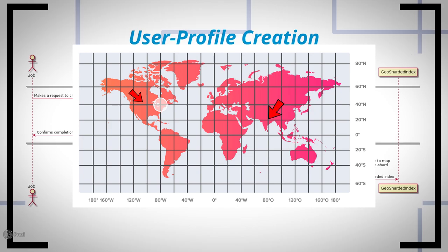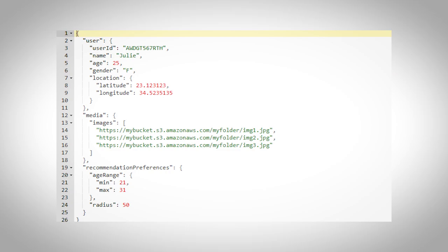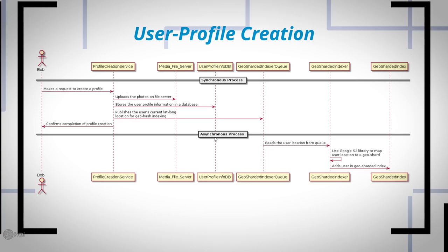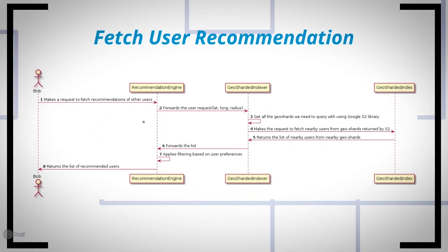Here you can see the data model for user profile creation — you can pause the video to study it more closely. Now let's move on to fetching user recommendations, where we design how to show potential matches for a user. This is where the geo-sharded index really shines. We have a collaborative sequence diagram here: the user makes a request to the recommendation engine, which forwards it to a geo-shard indexer.